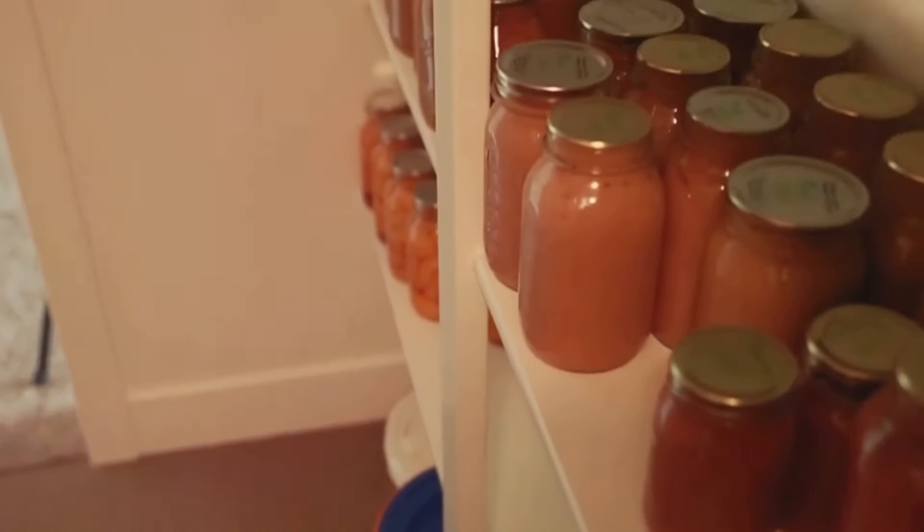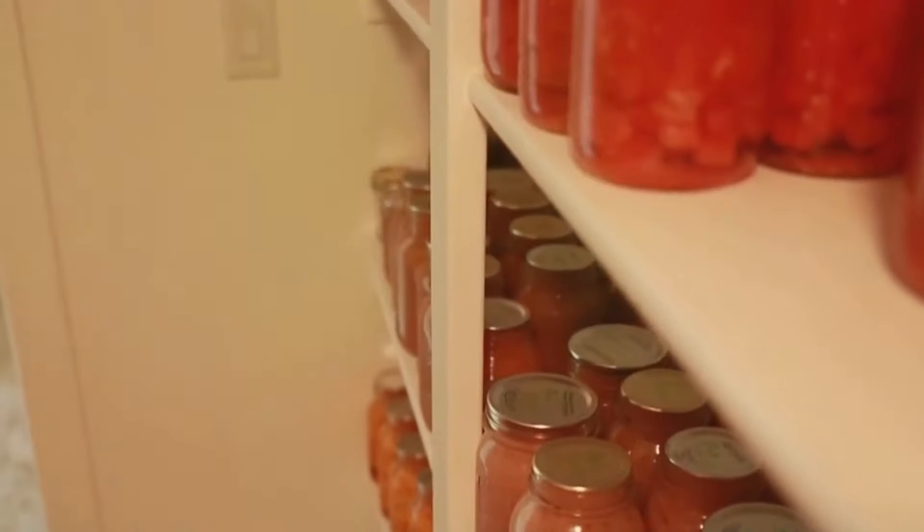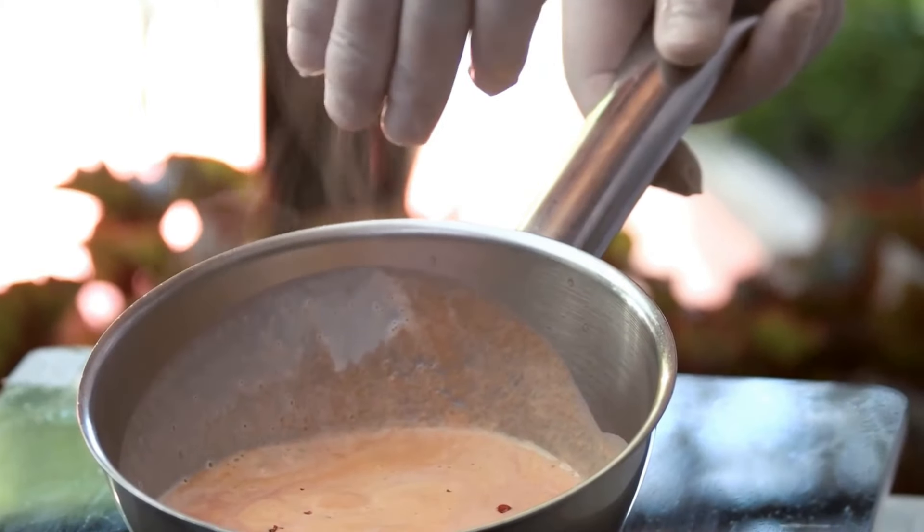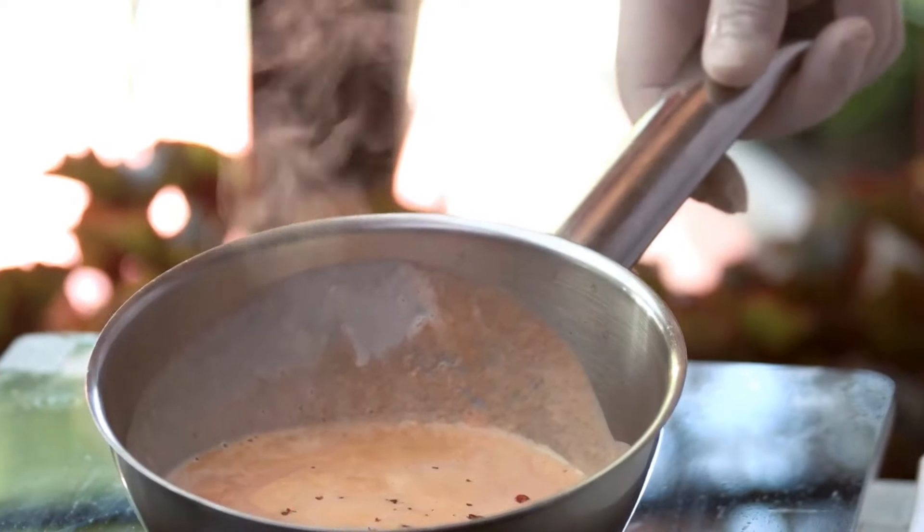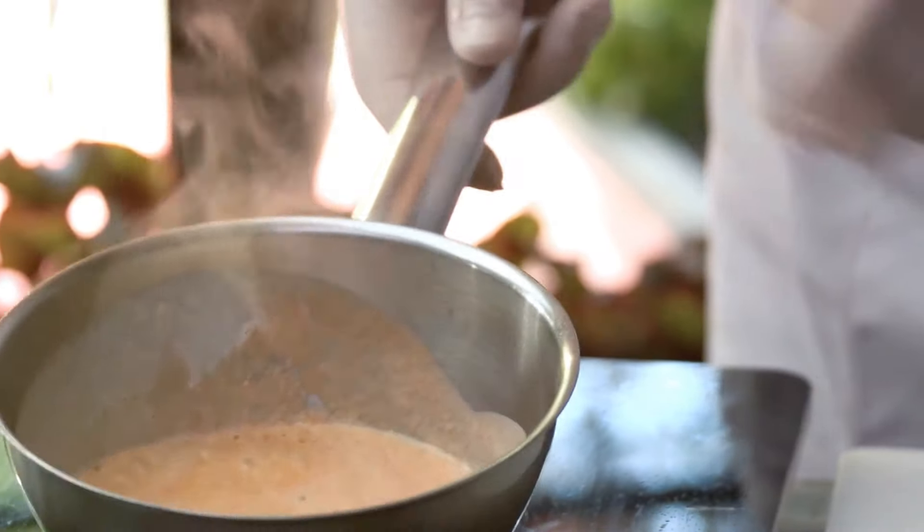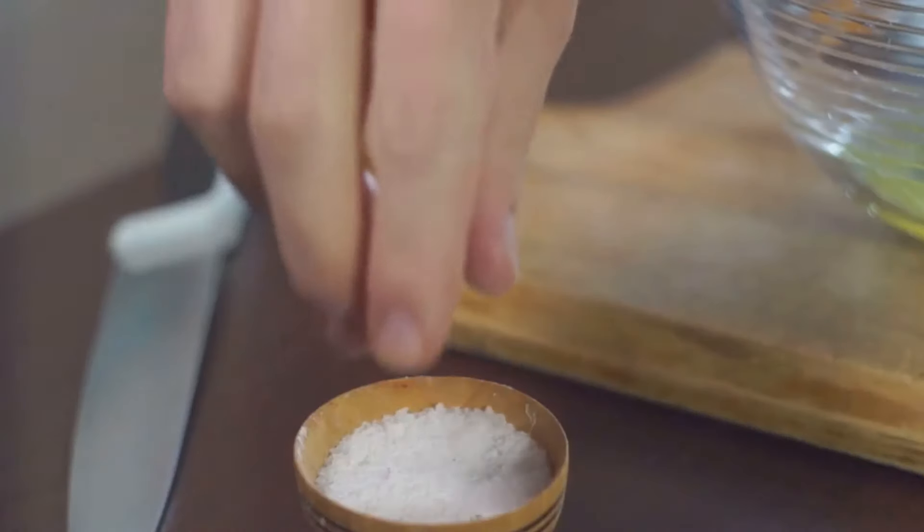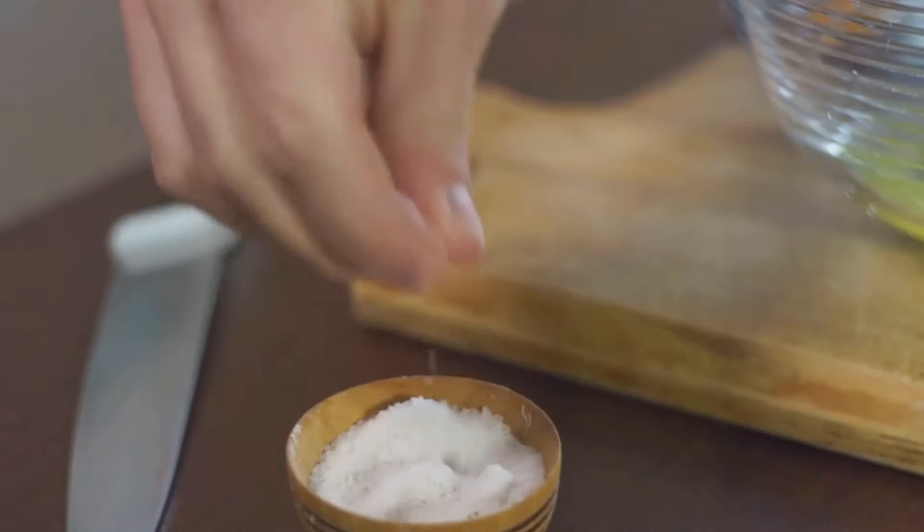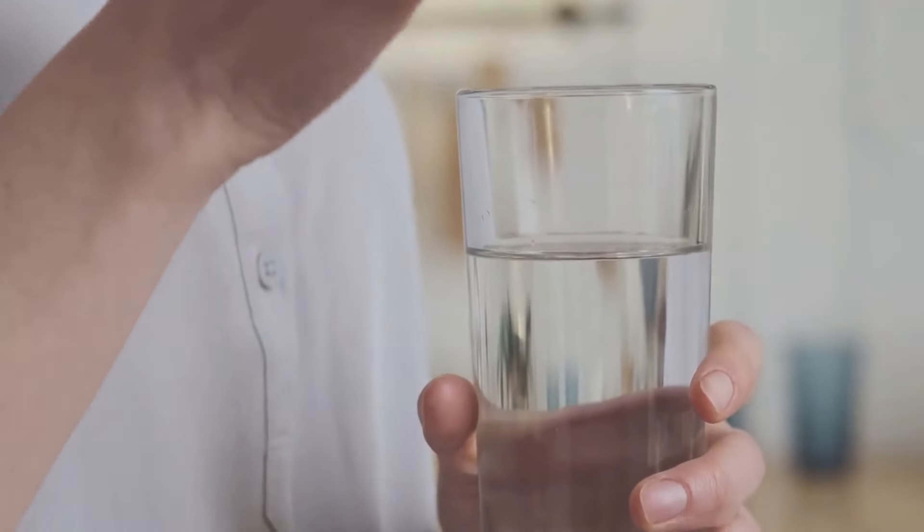Or mix it with other ingredients to make a variety of health-boosting drinks. Remember, clove water is best consumed fresh. Try to drink it within a day or two of making it. If you need to store it, keep it in the refrigerator and consume it within a week. This is the basic recipe for making clove water. However, feel free to adjust the quantity of cloves according to your taste preference. If you prefer a stronger flavor, add more cloves. If you like it milder, use fewer cloves.